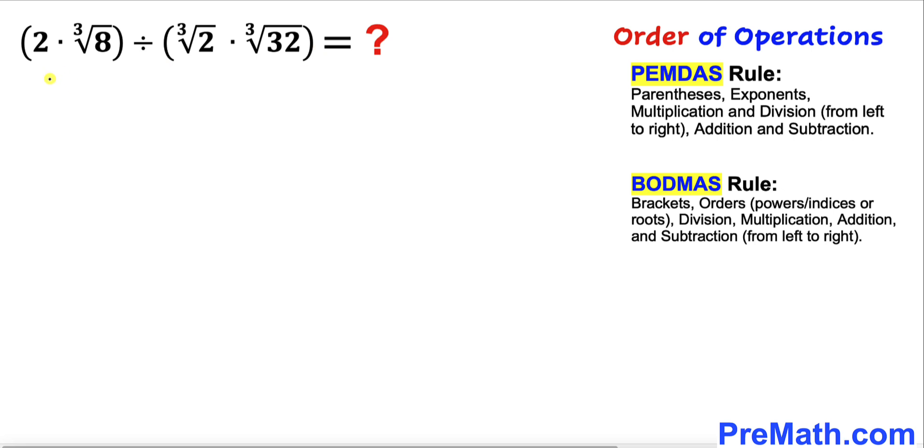Therefore we can write this expression as 2 times the cube root of 8 divided by this cube root of 2 times the cube root of 32.